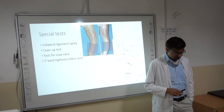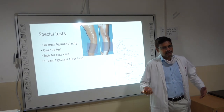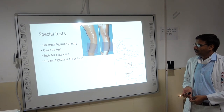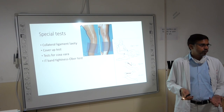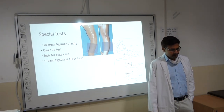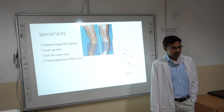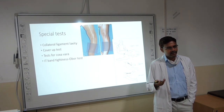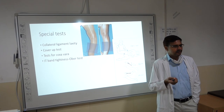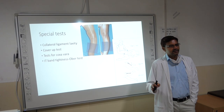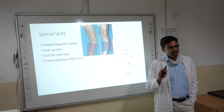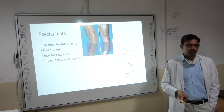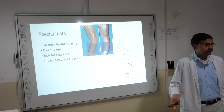Test for coxa vara: clinical signs include restricted abduction, excessive adduction, and a positive Trendelenburg test. For IT band tightness, perform Ober's test — the patient is in lateral decubitus with the sound side down, flex the knee and hip of the sound side, then flex the knee and hip of the involved extremity, extend the hip keeping the knee in flexion, and passively push the knee towards the couch. If IT band is tight, the knee will not reach the couch and will hang above — this is a positive Ober's test.